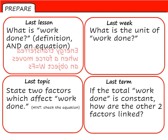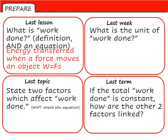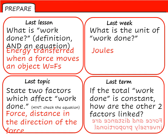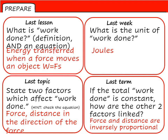So for number one, work done is the energy transferred when a force moves an object, and the equation is W equals F times S. Work done is measured in joules, as it's an energy transfer. The two factors which affect it are the force and the distance moved in the direction of that force. If work done is constant, then the other two are inversely proportional.